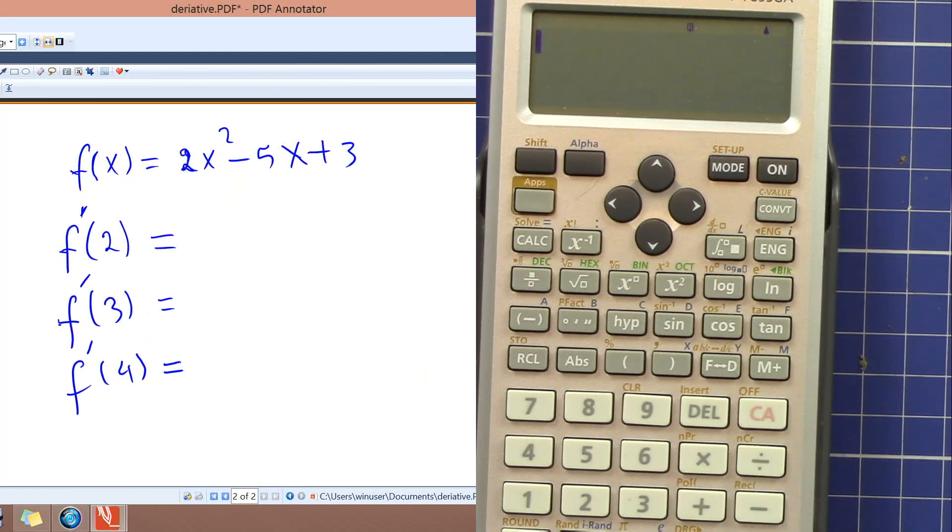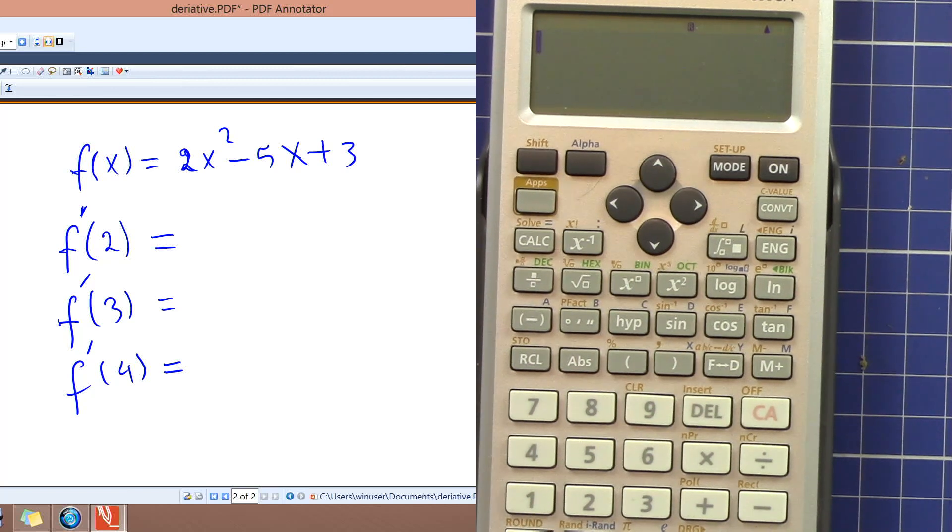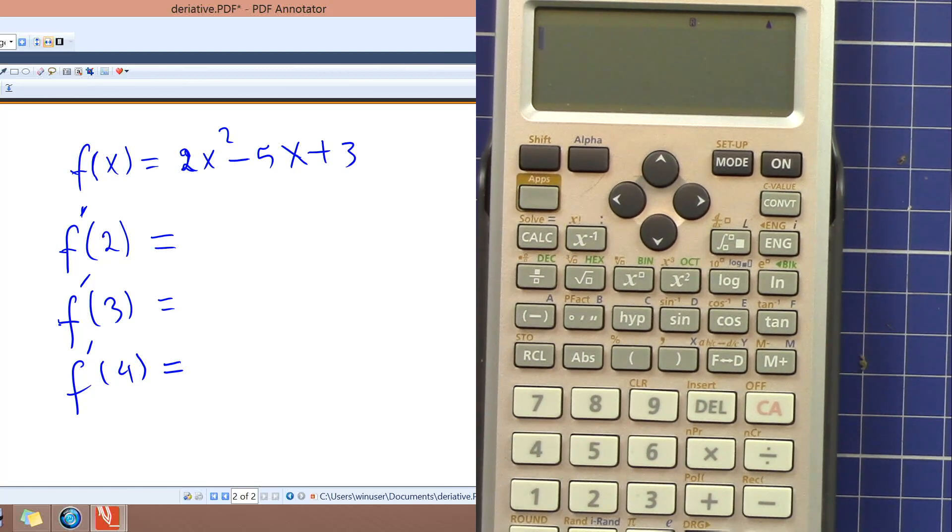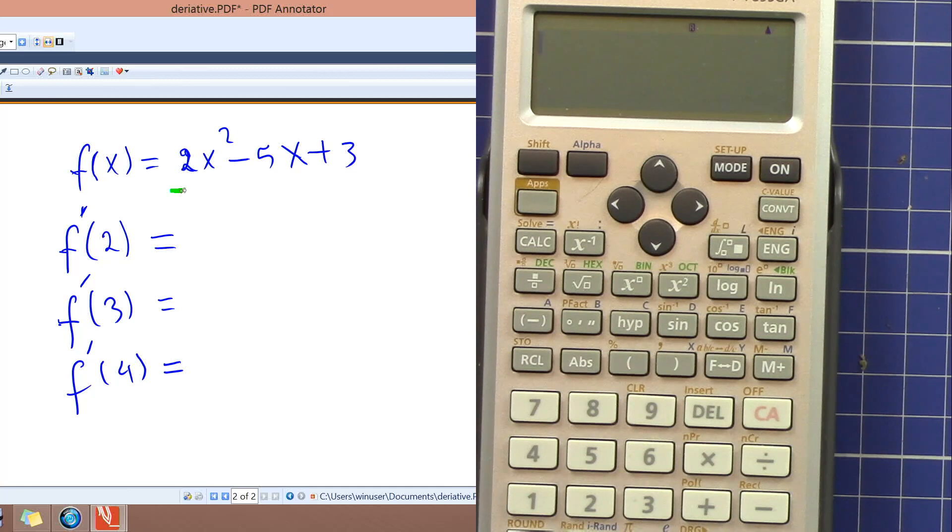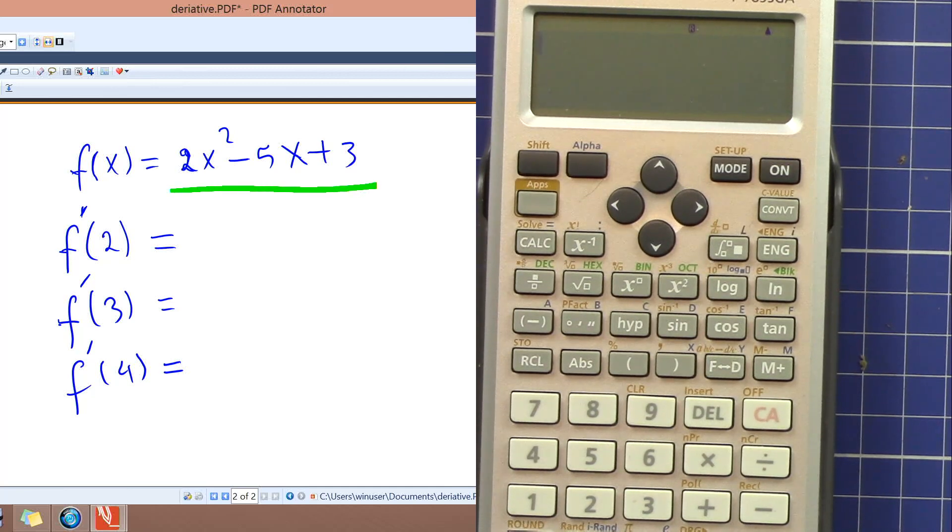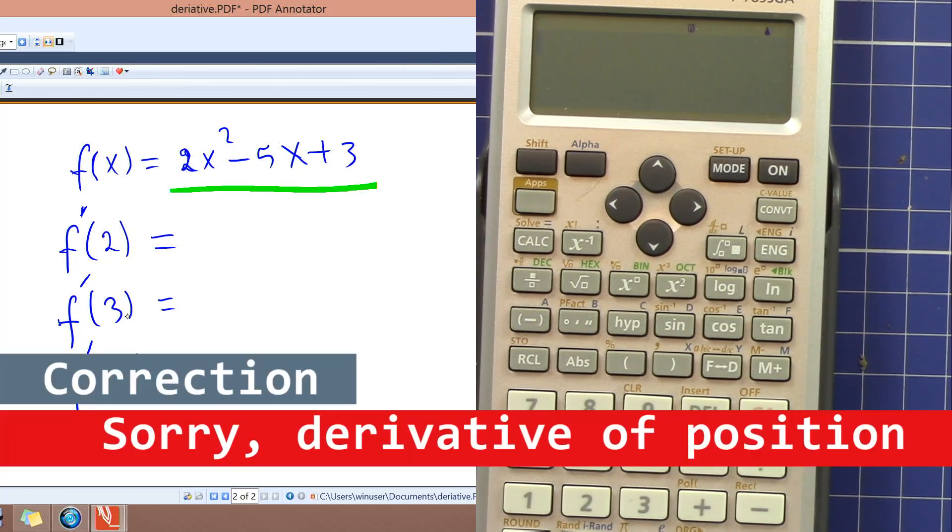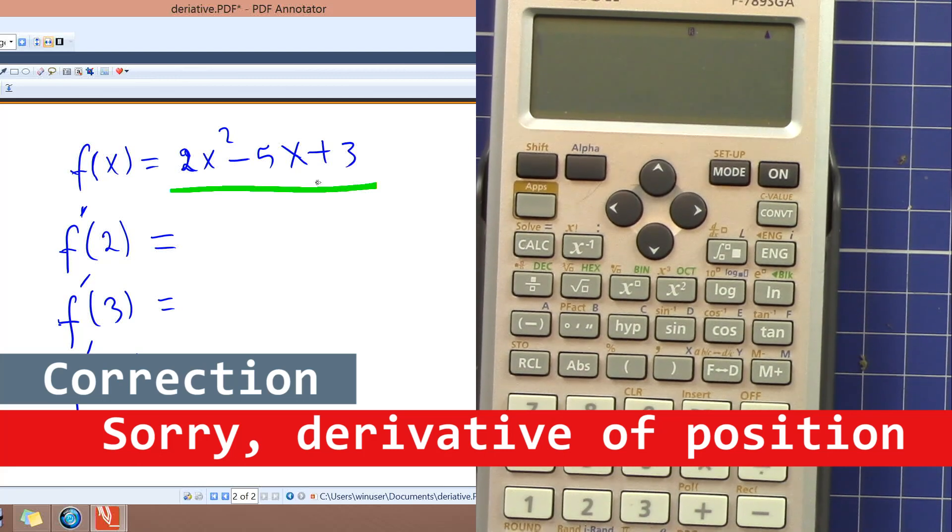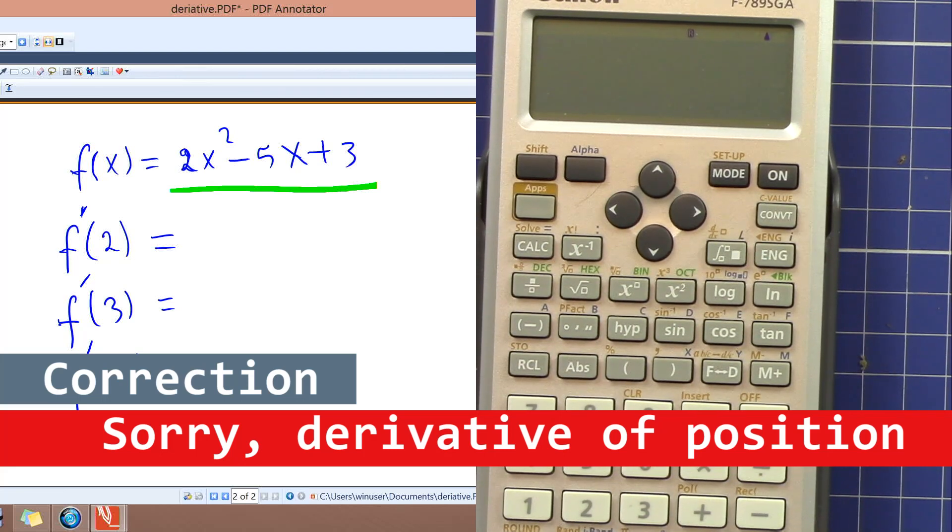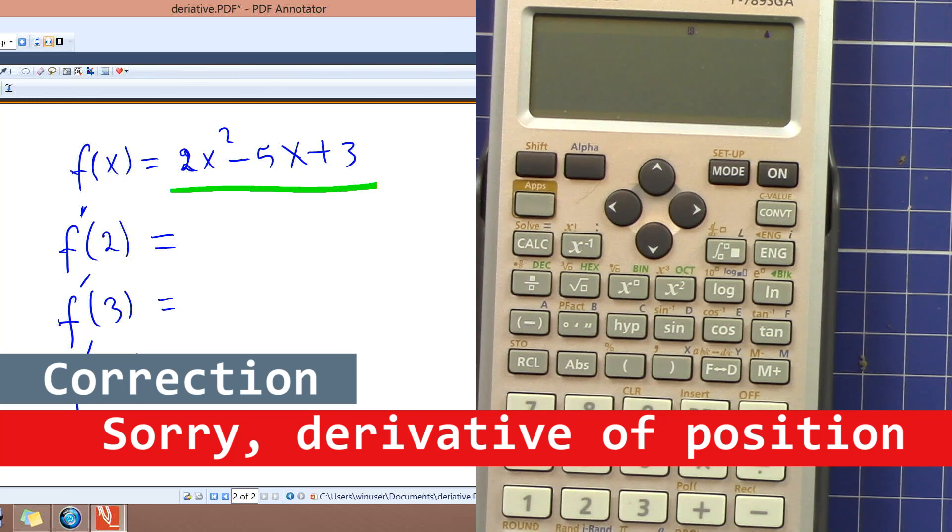So now for the derivatives, let's say we have an equation here that this is the position of an object and you want to find the velocity at two seconds, three seconds, and four seconds. So when you take the derivative of a function it will be the velocity. So now this is f prime, so these are the derivatives.